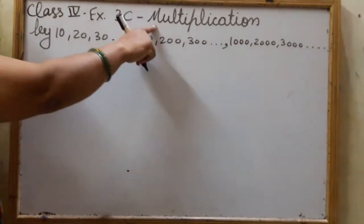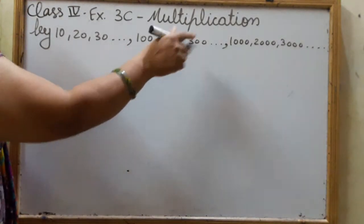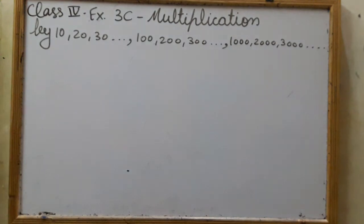Hello students, today we will learn multiplication by 10, 20, 30, 100, 200, 300, and so on, and 1000, 2000, 3000, so on. Whenever we have to multiply with these round numbers, we will learn how to do it today.